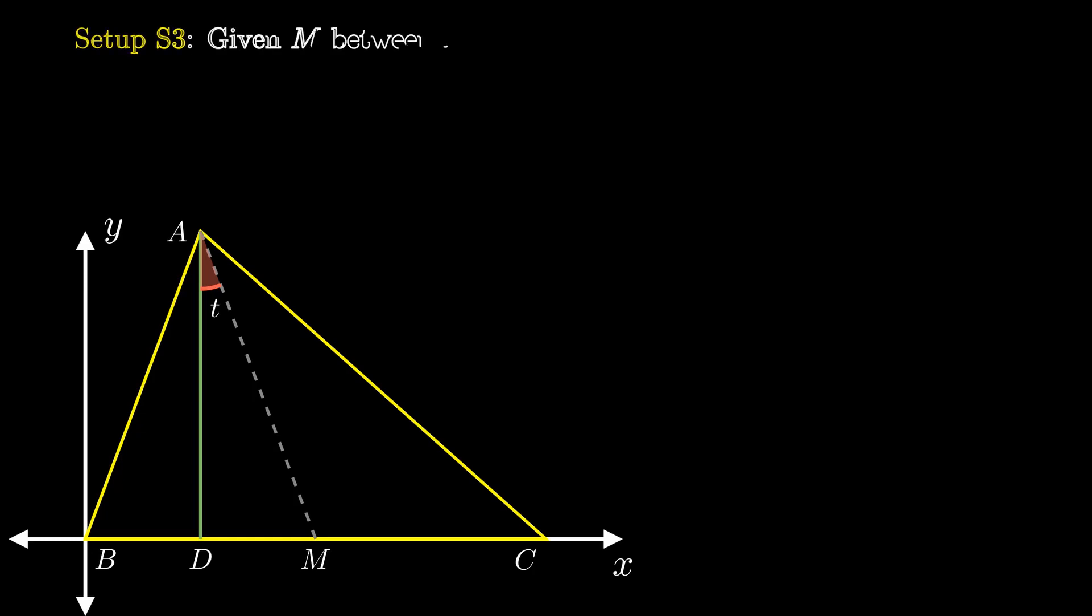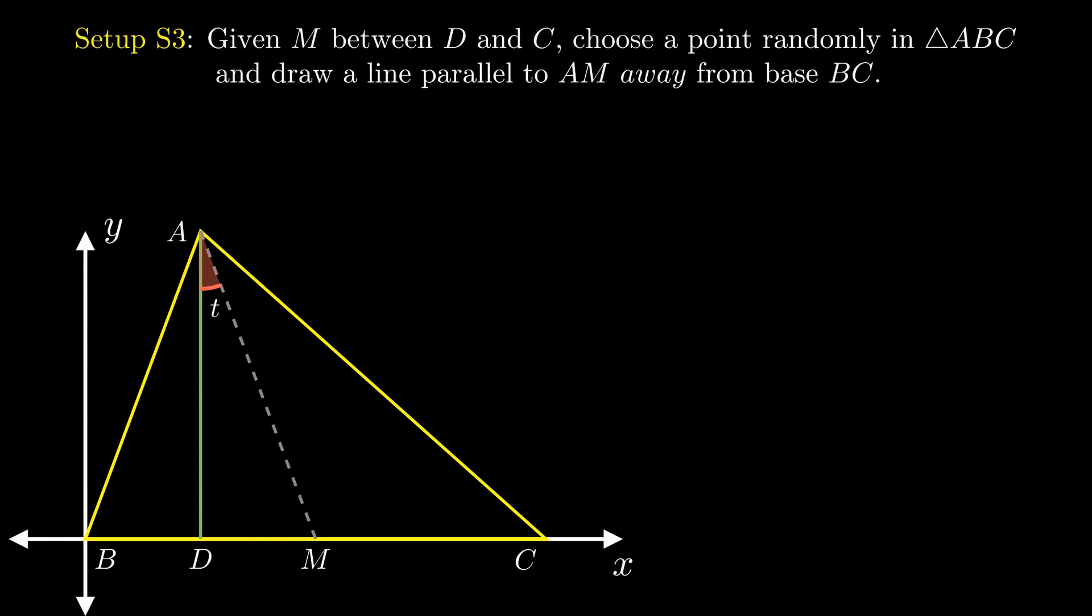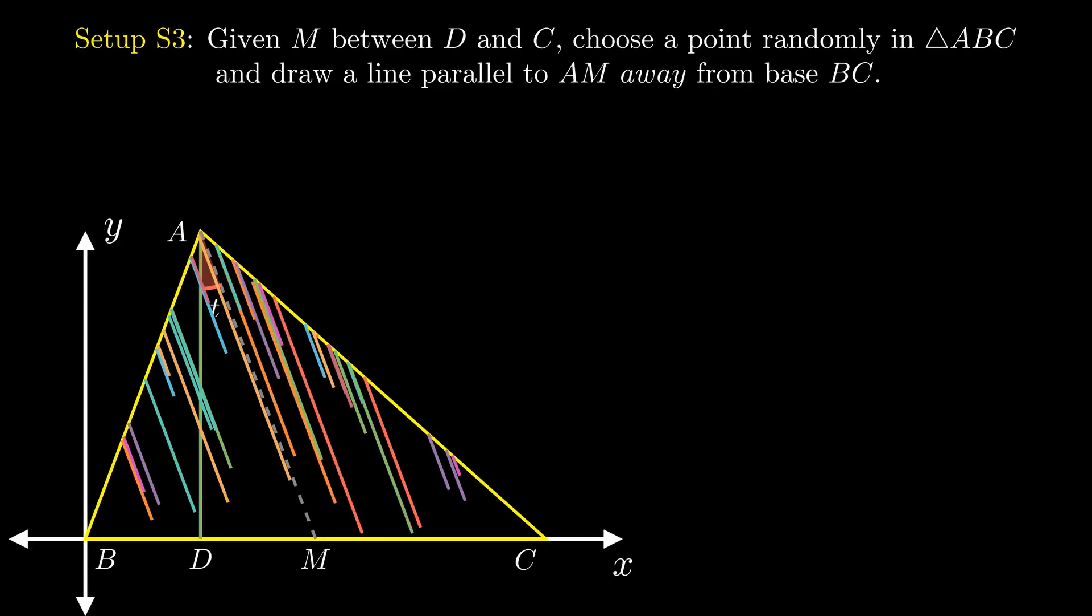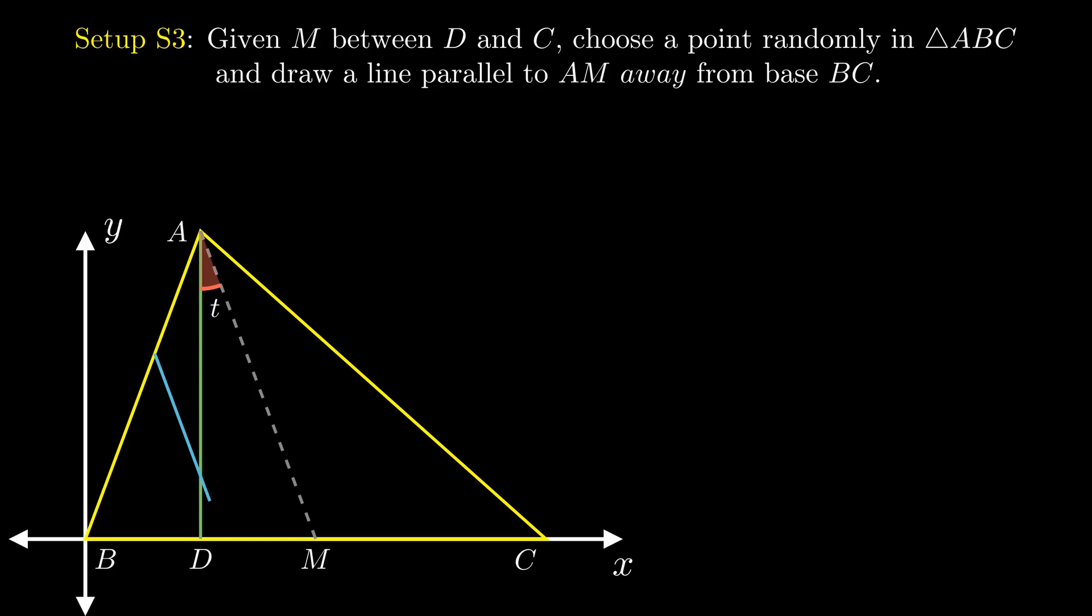Moving on, we are again given a point M between A and D. We choose a point inside this triangle and draw a line parallel to AM, but this time away from BC. We solve this case by considering two cases depending on whether the point lies inside triangle MAB or triangle MCA. The probability of the point being in either of these triangles is given by the ratio of their respective areas with the area of the full triangle.